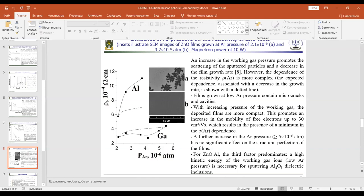For zinc oxide doped with aluminum, the third factor is predominant. High kinetic energy of working gas ions is necessary for sputtering aluminum oxide dielectric inclusions.